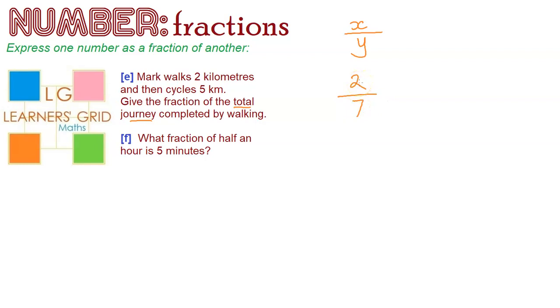Before we sign off on this particular answer, quick check, can it be simplified? The answer is no, and therefore this is the final answer. 2 over 7.